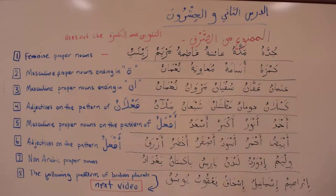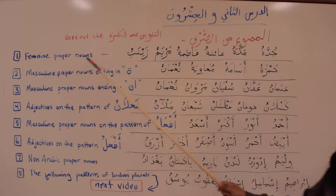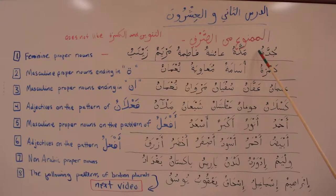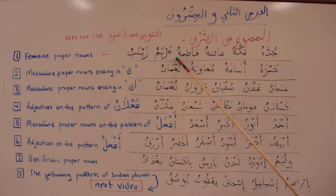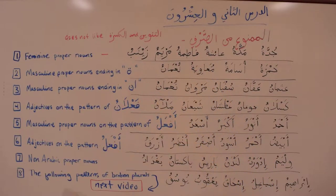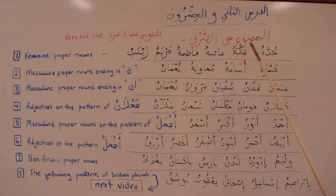Feminine proper nouns like Juddah — the name of a city in Saudi Arabia, also pronounced Jiddah — and Mekkah are ممنوع من الصرف. You'll never see Mekkah or Juddah with tanwin. Similarly, names like A'ishah, Fatimah, Maryam, and Zaynab are ممنوع من الصرف because they are feminine proper nouns. Not every name with a ta'ul marbootah is ممنوع من الصرف — only if it happens to be a feminine proper noun.